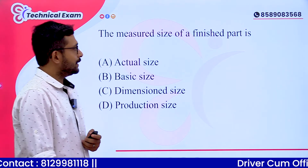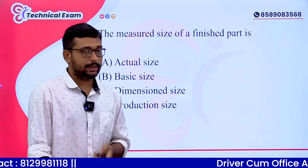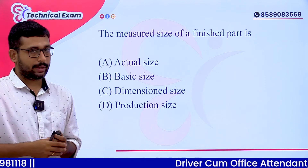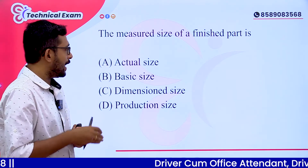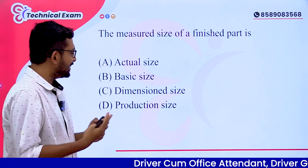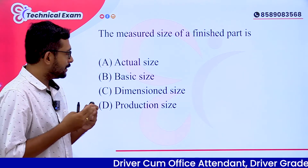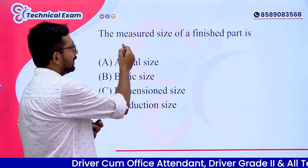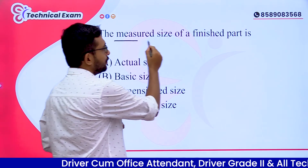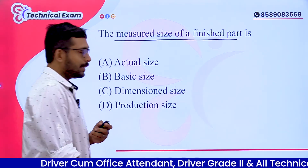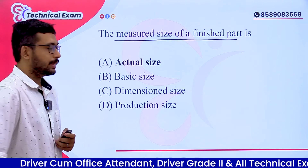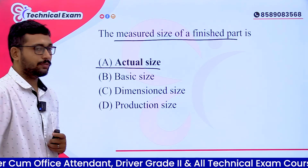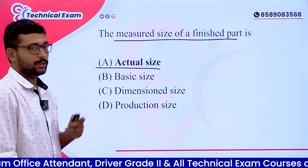The measured size of a finished part is — options: A. Actual Size, B. Basic Size, C. Dimensioned Size, D. Production Size. The answer is Option A, Actual Size. The measured size of a finished part is called actual size.